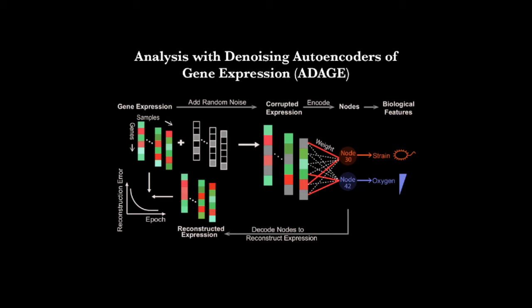To succeed at this, the neural network needs to learn about the important context underlying the data — for instance, what strain of Pseudomonas the data are measuring, what the oxygen levels are in the experiment, and many other features. We then looked at the neural network itself to examine what it had learned, and we performed additional experiments to understand how robust the predictions from the model would be.